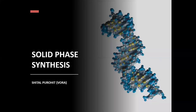We will start with the next part of combinatorial chemistry, that is the classification of combinatorial chemistry. Combinatorial chemistry is mainly classified into two types: solid phase synthesis and solution phase synthesis. Firstly, we will see solid phase synthesis, that is how to apply combinatorial chemistry in the way of solid phase synthesis.